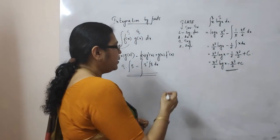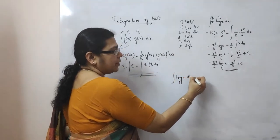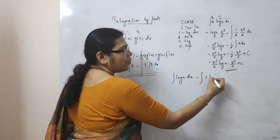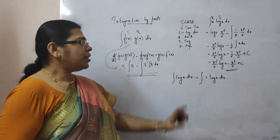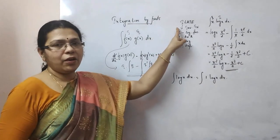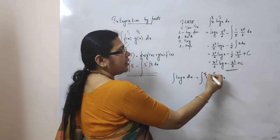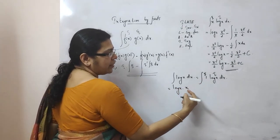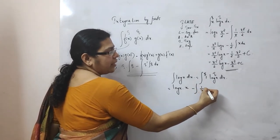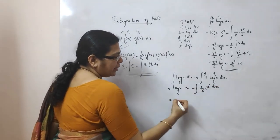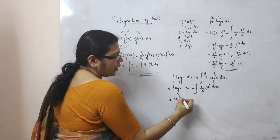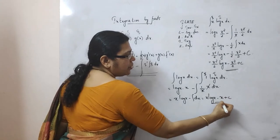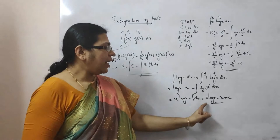One more example: integral of log(x) dx. Do we have two functions here? We treat it as log(x) times 1, so the first function is log(x) and the second function is 1. Applying integration by parts: log(x) into integral of 1, that is x, minus integral of derivative of log(x) — which is 1/x — into x, into dx. The x and x cancel, giving x·log(x) minus integral of dx, which is x. So the integral of log(x) is x·log(x) minus x plus c.